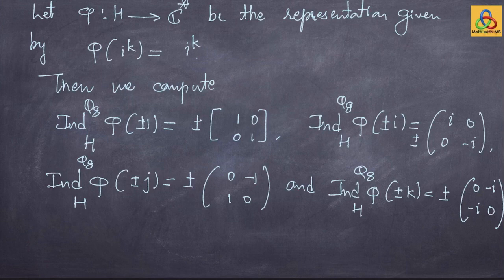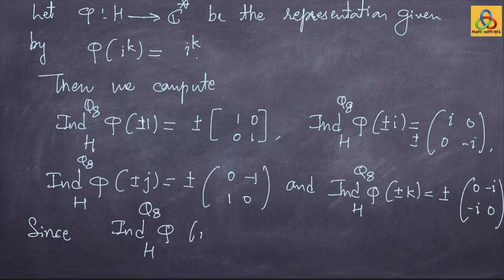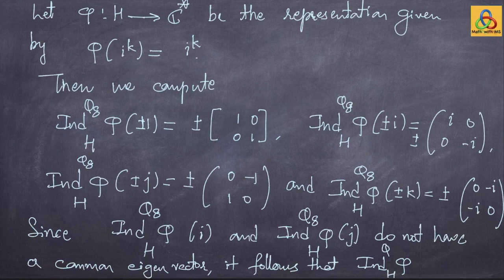Is this induced representation irreducible? You can easily check that it is irreducible, because it is a degree-2 representation and either you can compute the character of the induction of phi from H to Q₈, or use the fact that a degree-2 representation is irreducible if and only if all elements of the group do not have a common eigenvector. Since the matrices for i and j do not have a common eigenvector, the induced representation is irreducible. We have seen plenty of examples illustrating how induction really works.